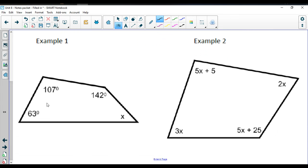Two examples here for you. This first one is pretty basic. This is the one where I would say you can do 63 plus 107 plus 142. 63 plus 107 plus 142 will get you to 312. So to figure out x, you're going to do 360 minus 312.